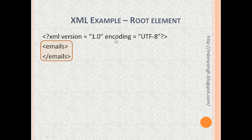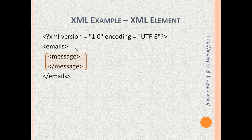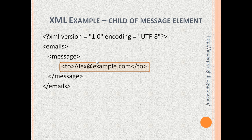The next thing we have to put in our XML document is the root element. An XML document has exactly one root element — everything apart from the XML declaration comes within this root element. Since we are going to have messages data, we have an XML element called message. We can then have other XML elements like 'to'. The whole string from the beginning tag 'to' to the ending tag '/to', including the data, is our XML element.